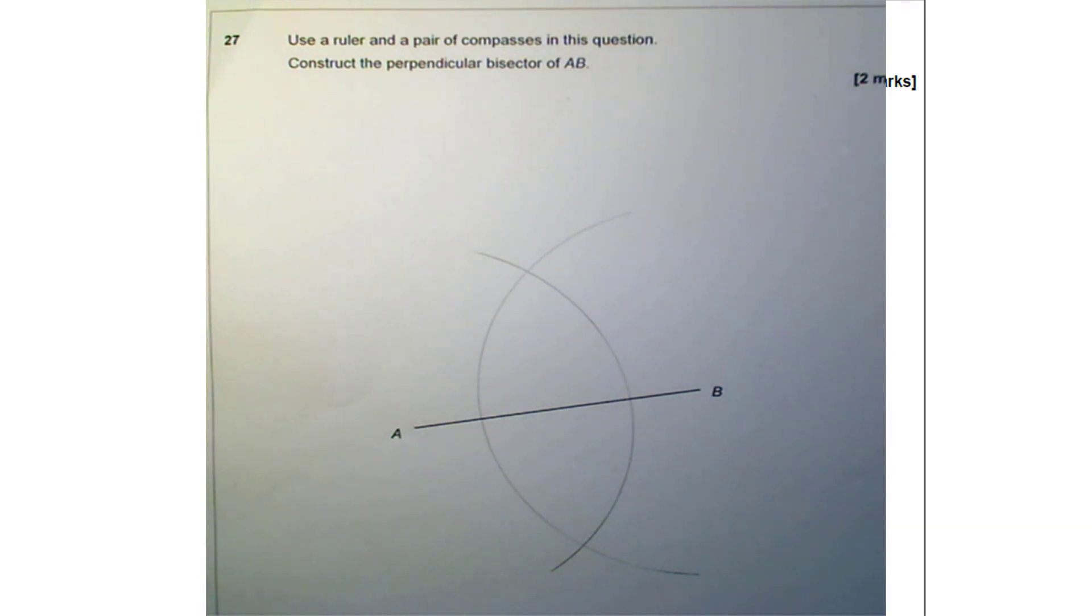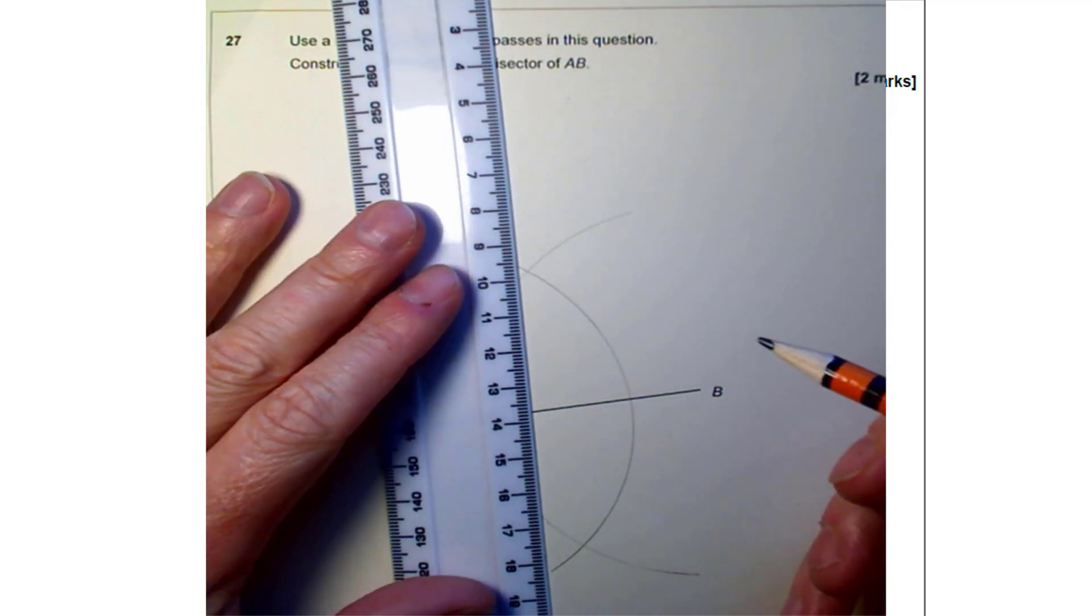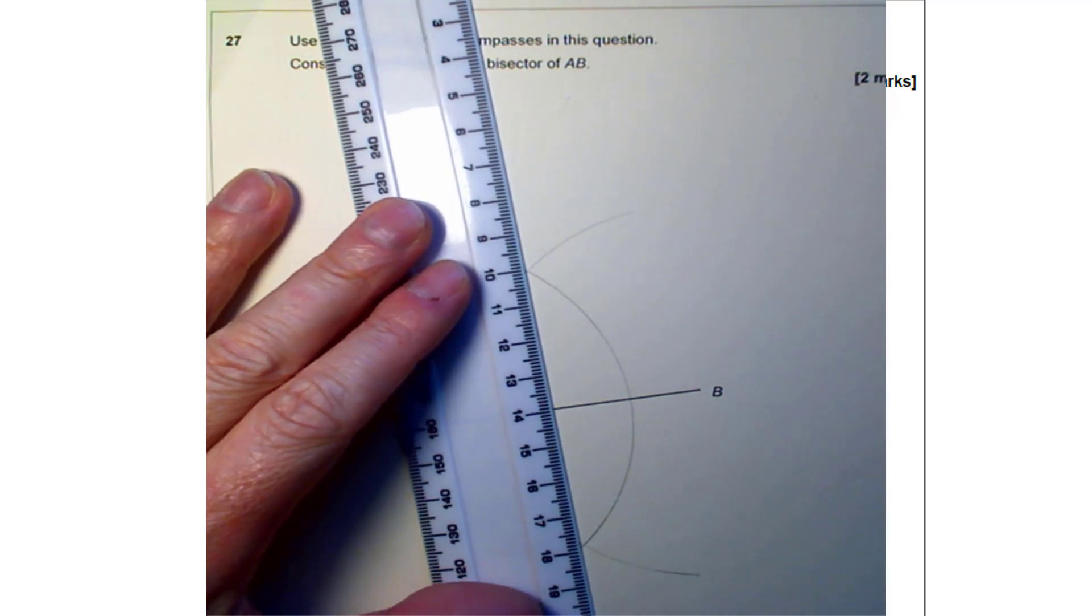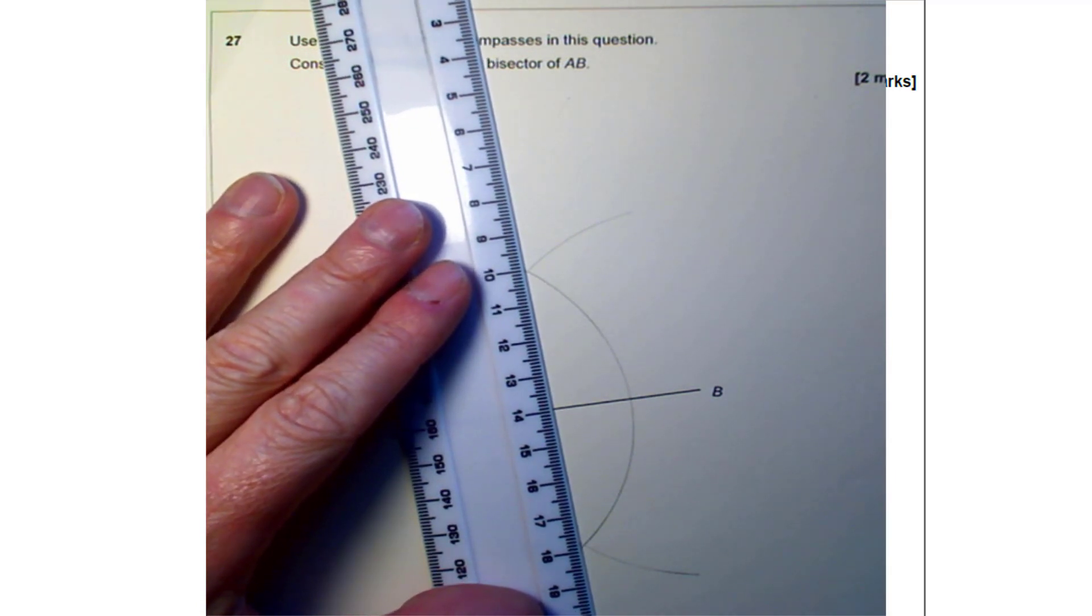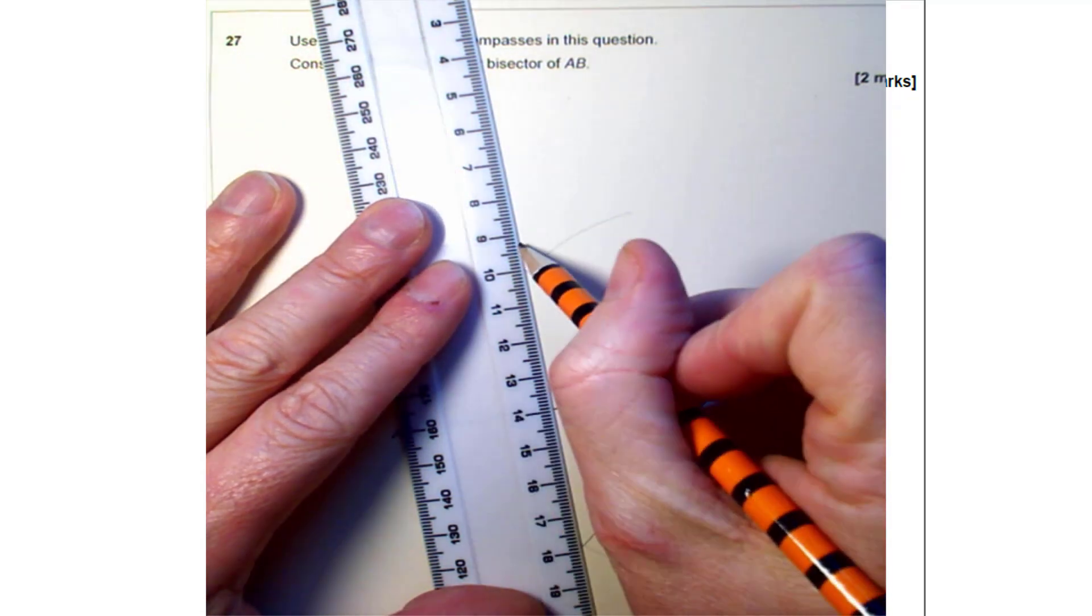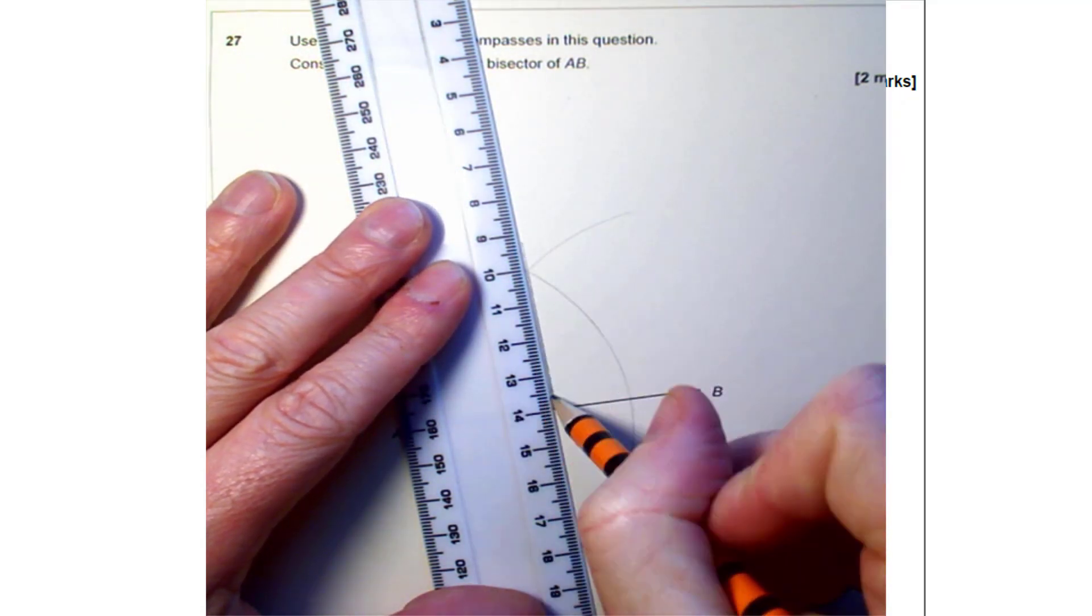Then using your ruler, draw your perpendicular bisector through the two points where the arcs crossed, like so.